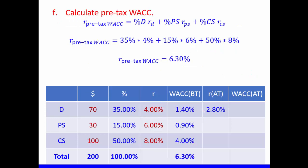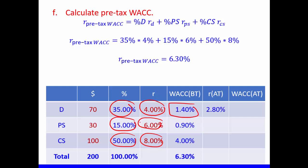Next, calculate the pre-tax WACC, or before-tax WACC. The formula is: percentage of debt multiplied by before-tax cost of debt, plus percentage of equity multiplied by cost of equity. Since equity is split into two types, we get: 35% × 4% = 1.4%, plus 15% × 6% = 0.9%, plus 50% × 8% = 4%. The summation gives us a total of 6.3%. Therefore, our pre-tax WACC is 6.3%.